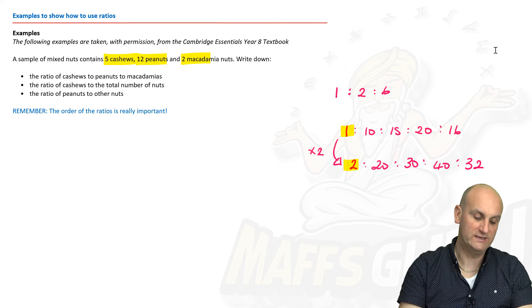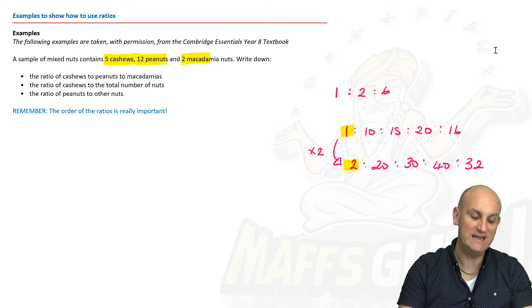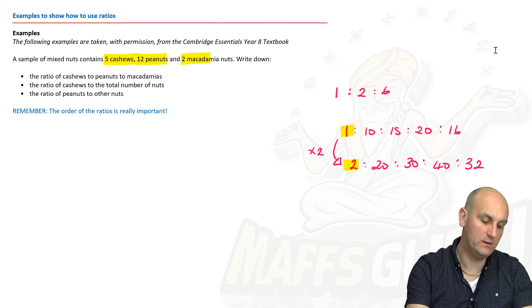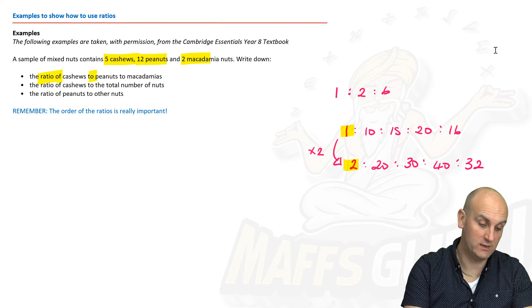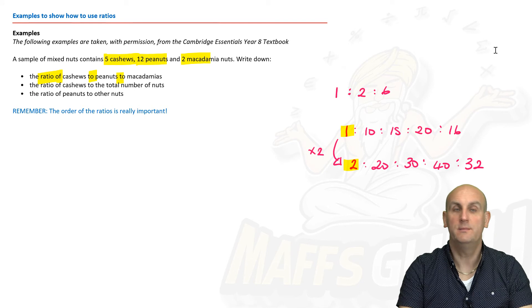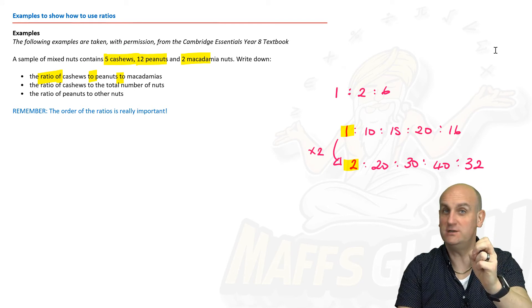So we've got three ratios here. We've got cashews, peanuts, and macadamias. Mmm, nuts, now I'm getting hungry again. The ratio of cashews to peanuts to macadamias. Now one of the important words in math that helps with ratios, other than the word ratio, is the word 'to' because I think of 'to' as two dots.